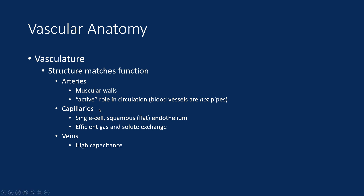Capillaries are very small with single-cell squamous endothelial walls — structure matches function. This design allows for efficient exchange of gases and solutes. Veins are large vessels with relatively thin walls, built for high capacitance — that is, how much blood they can hold at any one time. Indeed, at any given time in the body, most of the blood is on the venous side of the circulation.